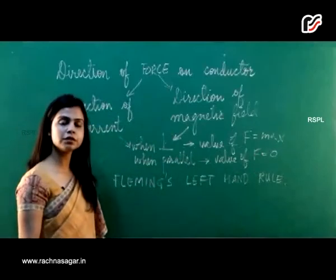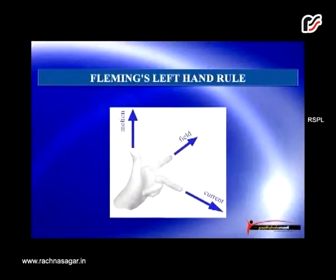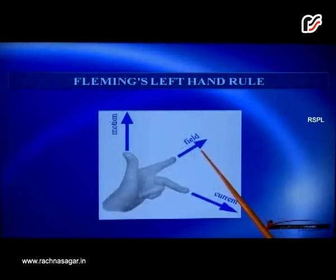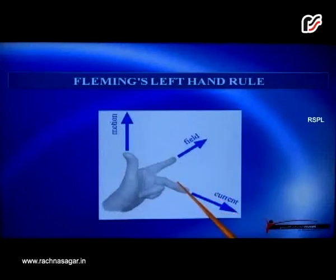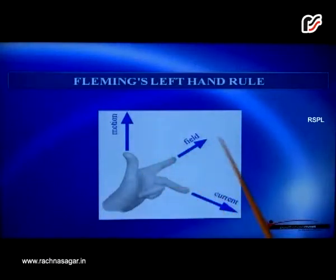Let us understand Fleming's left-hand rule. If your first finger shows the direction of the magnetic field and your second finger shows the direction of the current flowing through the circuit, and if they are perpendicular to each other, then the position of your thumb indicates the motion of the conductor or the force that the conductor is experiencing.